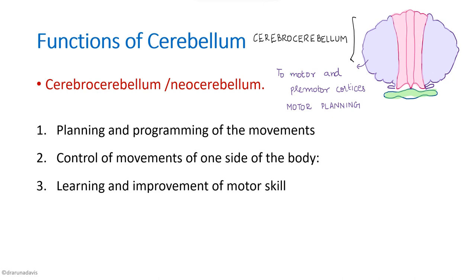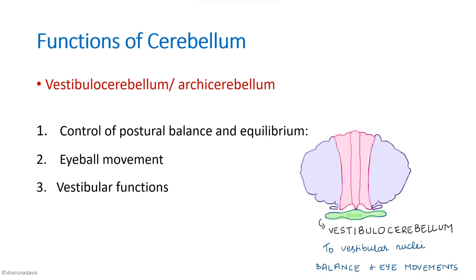The cerebrocerebellum, which receives and sends output to the cortex, is involved in planning and programming of movements. It also controls movements of one side of the body and is helpful in learning and improvement of motor skills. The vestibulocerebellum controls posture, balance, and equilibrium, and is also involved in eyeball movements and vestibular functions due to its projections to the vestibular nuclei.